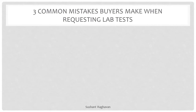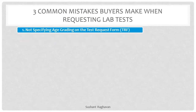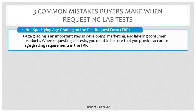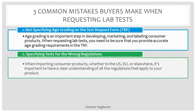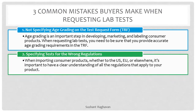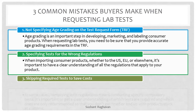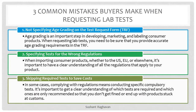Three common mistakes buyers make when requesting lab tests. First: not specifying age grading on the test request form. Age grading is an important step in developing, marketing, and labeling consumer products. When requesting lab tests, you need to provide accurate age grading requirements in the TRF. Second: specifying tests for the wrong regulations. When importing consumer products — whether to the US, EU, or elsewhere — it is important to have a clear understanding of all the regulations that apply to your product. Third: skipping required tests to save costs. In some cases, complying with regulations means conducting specific compulsory tests, and it is important to know which tests are required versus only recommended, so that you don't get fined or end up with products stuck at customs.